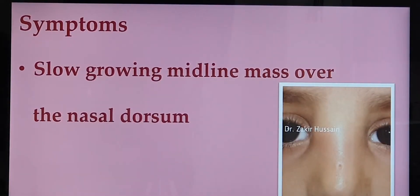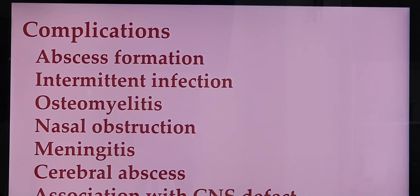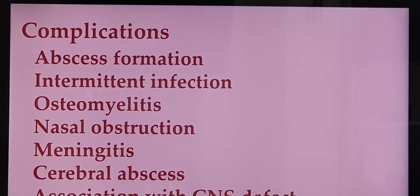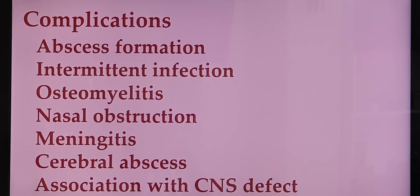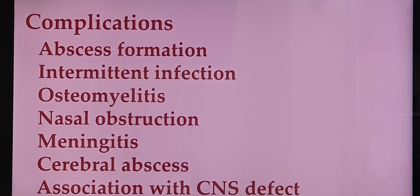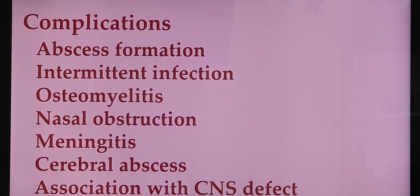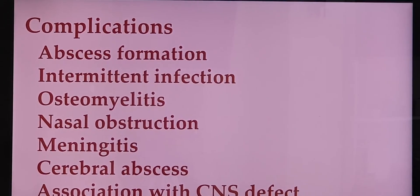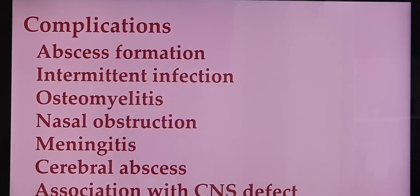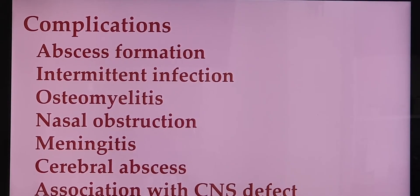We come to a diagnosis with an investigation — we would like to do an MRI. But before that, let me tell you the complications of this condition. An abscess can be formed; there may be a history of recurrent infection of the cyst. The nasal bone can result in osteomyelitis — the infection of the bone. And if it is the third variety where the dermoid cyst has got an intracranial connection, if the dermoid cyst gets infected, it can spread to the brain and result in meningitis — the covering of the brain is called the meninges. It can result in meningitis, or it can even result in a brain abscess.